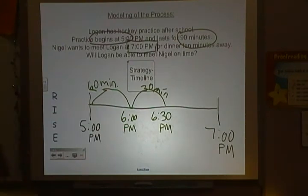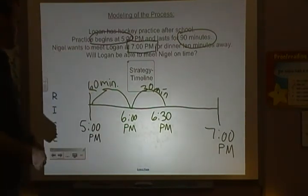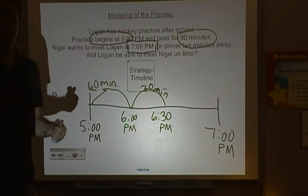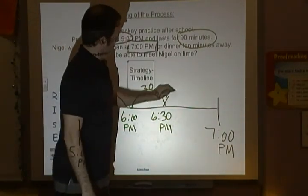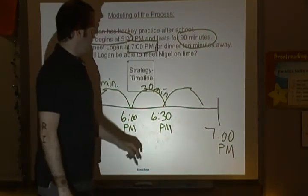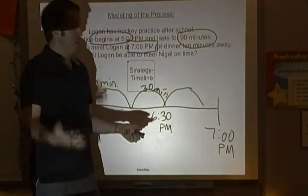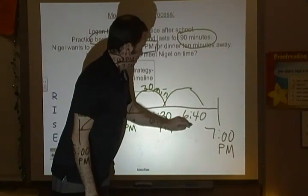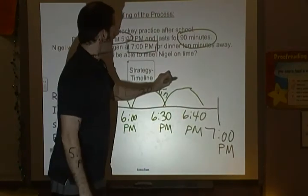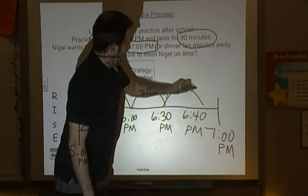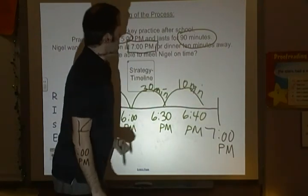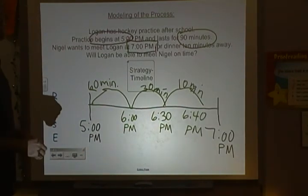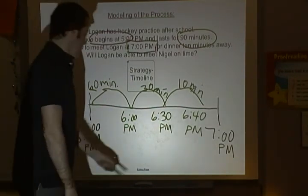Am I finished? Well, Nigel wants to meet Logan at 7 p.m. for dinner, 10 minutes away. So I still need to add travel time of 10 minutes. 6:30 plus 10 more minutes would be 6:40. Will Logan be able to meet Nigel on time?